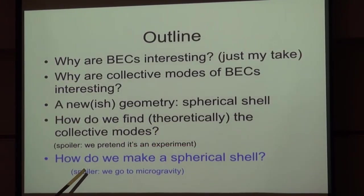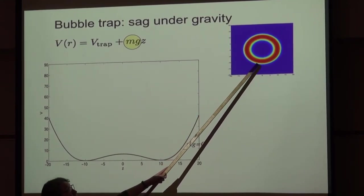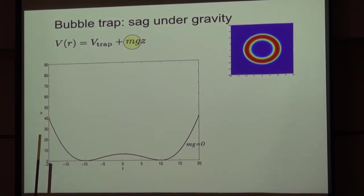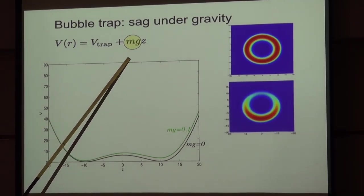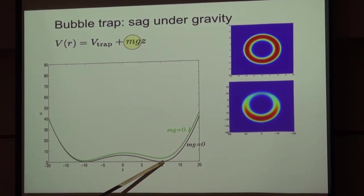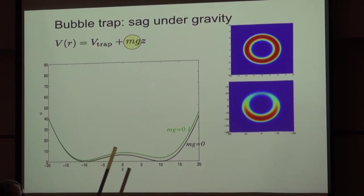I want to change gears a little bit and talk about how you would actually make one of these. The problem is it's hard for two reasons. If you have a bubble trap of the type I described and you're really happy you're going to get this spherical shell — the problem is you also have gravity. In a normal harmonic trap, gravity doesn't really matter because you can complete the square; the whole thing just moves down but still acts like it's harmonically trapped. That doesn't work with the spherical shell BEC. If you imagined a shell and then pulled on all of it with gravity, the top is going to get a little bald and the bottom is going to get a little heavier.